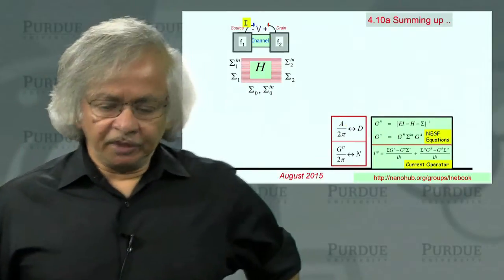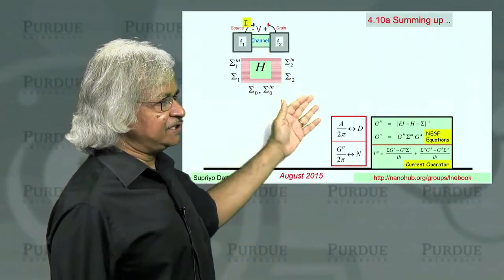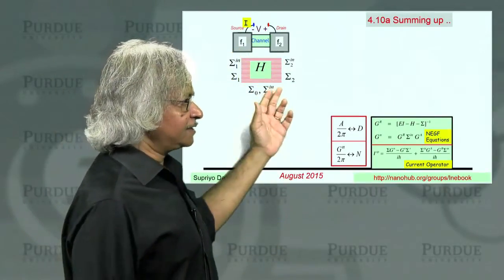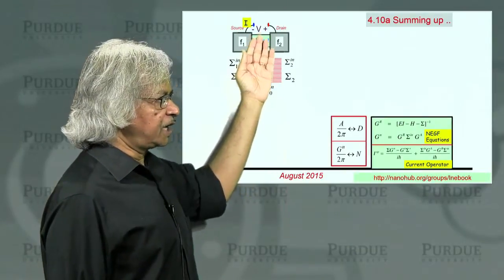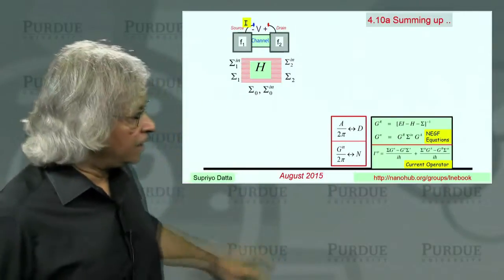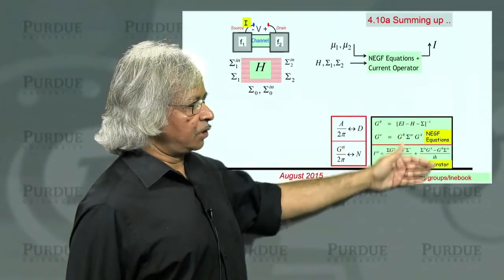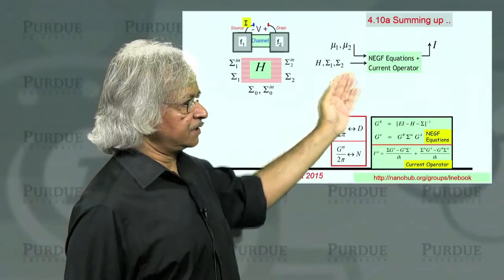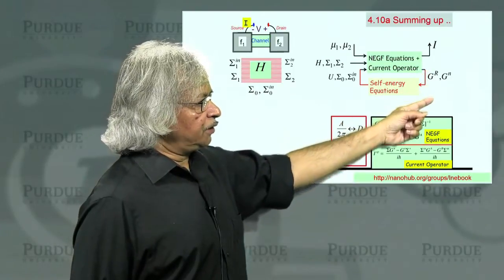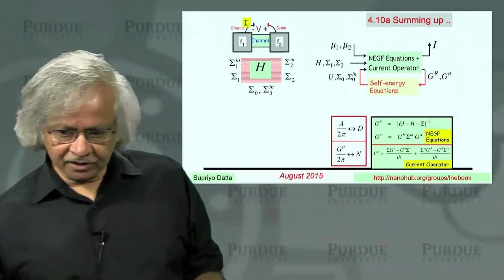We started this unit coming from previous units with the general NEGF method. If you want to describe quantum transport through any device, you need this H which describes your channel, sigma 1 and sigma 2 which tell you the connection to the contacts, and sigma 0 describing the interactions. Then in principle you could use these equations - given sigma 1, sigma 2, etc., you can calculate the current. Usually if you want to include interactions, you have to do this self-consistently.